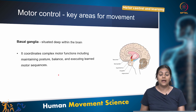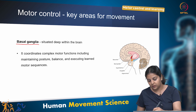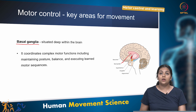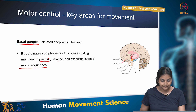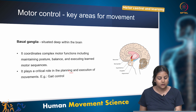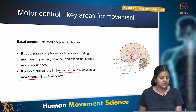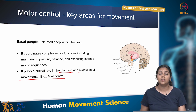Another area essential for movement execution is the basal ganglia, situated deep within the brain. It coordinates complex motor functions including maintaining posture, balance and executing learned sequences. It plays a critical role in the planning and execution of movements — for example, gait control. The basal ganglia plays a critical role in maintaining gait, which we will look at in coming modules.